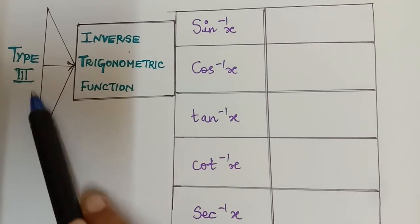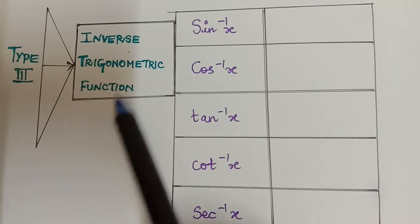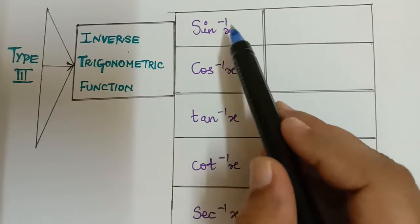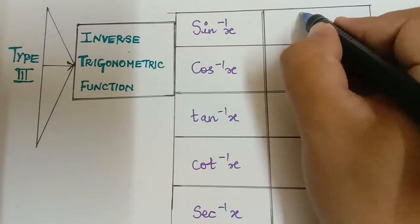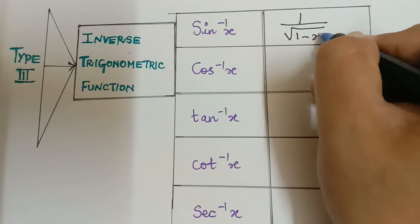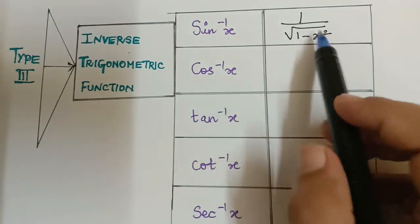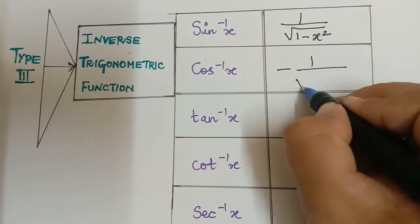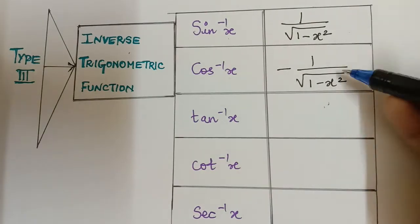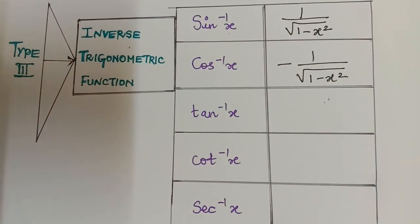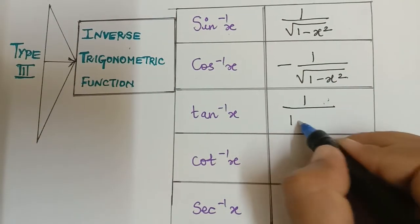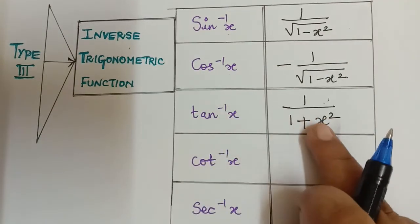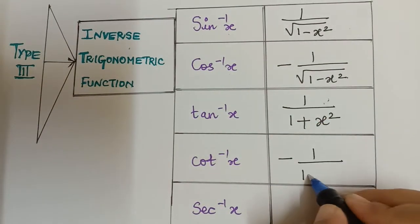Now we have the third type, which is inverse trigonometric functions. The differentiation of sin⁻¹x is 1 divided by √(1−x²). For cos⁻¹x it is the same as sin⁻¹x with a negative sign: −1/√(1−x²). It is very simple to remember. The differentiation of tan⁻¹x is 1/(1+x²), and the differentiation of cot⁻¹x is the negative of that: −1/(1+x²).